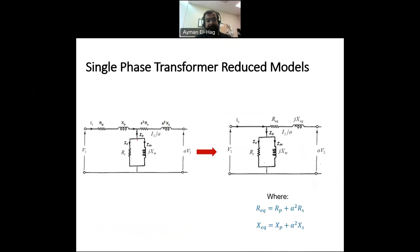So the first reduced model, what we will be doing, basically, we will be moving the impedance of the primary winding from this side to that side. So basically, you have now R equivalent and X equivalent. And R equivalent is the primary resistance plus the A square RS, because they are in series. And X equivalent, the same thing. So basically, we just moved the core part behind those impedances of the primary, and then we can add them in series.